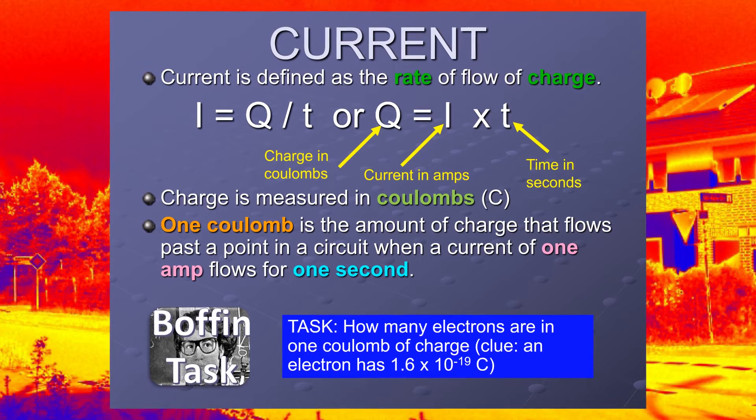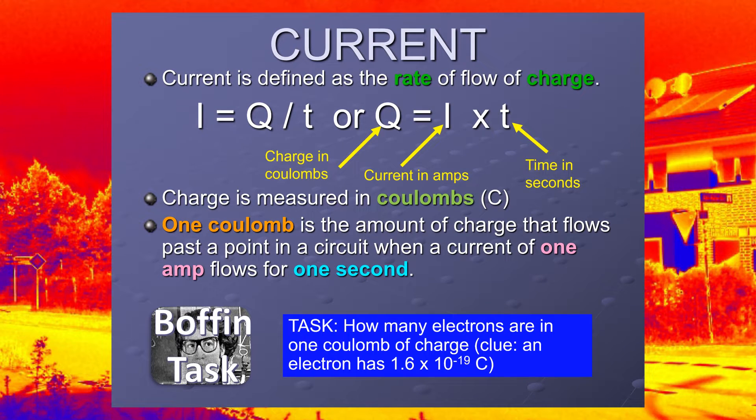Okay, so I equals Q over T. Q is the symbol we use for charge. Charge is measured in coulombs, and one coulomb is defined as the amount of charge that flows past a point in a circuit when a current of one amp flows for one second.